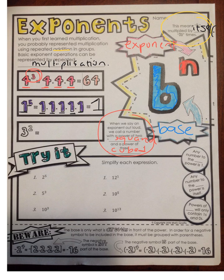So go ahead and take a look at 3 squared. What is the base? The base is 3. And we are going to multiply it by itself twice, because of the 2. And 3 times 3 is 9.